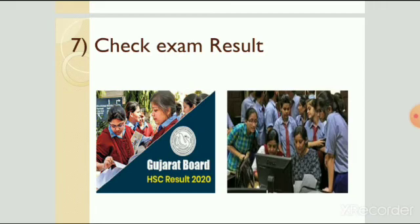Number seven is checking exam results online. Nowadays tenth and twelfth standard results are declared on the internet. In the current situation we are also studying online, which is remarkable but possible only with the help of internet. In this video we learned about what is internet, how internet works, and the uses of internet. In the next video we will learn about the requirements for an internet connection and internet terms. Thank you.